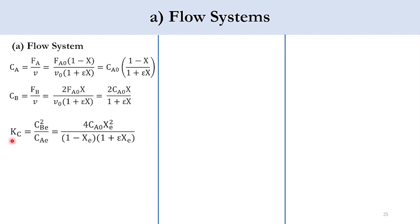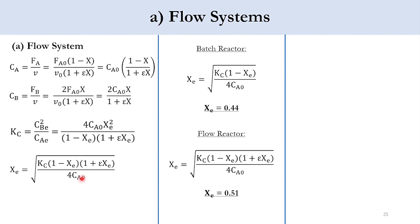Now representing K_C is equal to C_BE squared over C_AE. C_BE at equilibrium, this expression will come here. Since it is a square, so 2 converts to 4. 4C_A0 into x_E squared. C_A0 is here because this C_A0 will be cancelled out with this C_A0 in the denominator. C_AE is in that denominator, so C_A0 will come here. So accordingly, 4C_A0 x_E squared over 1 minus x_E times 1 plus epsilon x_E. And once you rearrange it in terms of x_E, it is equal to square root of K_C times 1 minus x_E times 1 plus epsilon x_E over 4 times C_A0. Now if we solve these, we get the values of x_E for batch reactor as 0.44, while for flow reactor as 0.51.